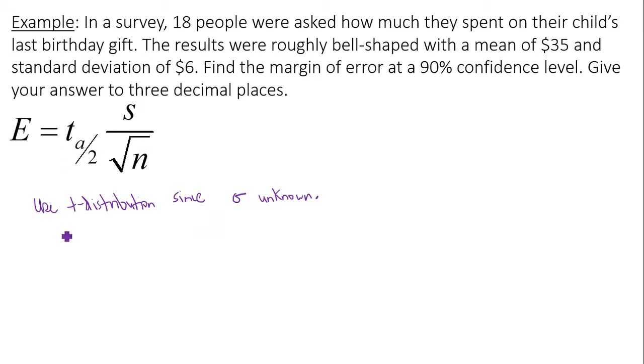Let's find t sub alpha over 2. In this case, our alpha is 1 minus our confidence level. That's 1 minus 0.90, that is 0.1. Which means alpha over 2, or 0.1 divided by 2, is going to be 0.05.